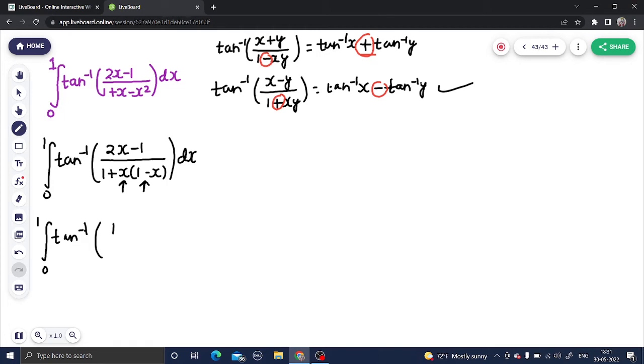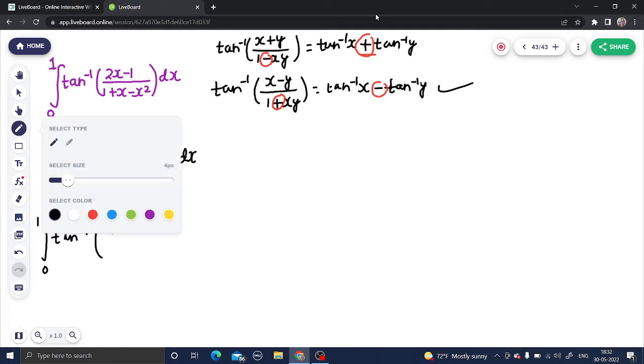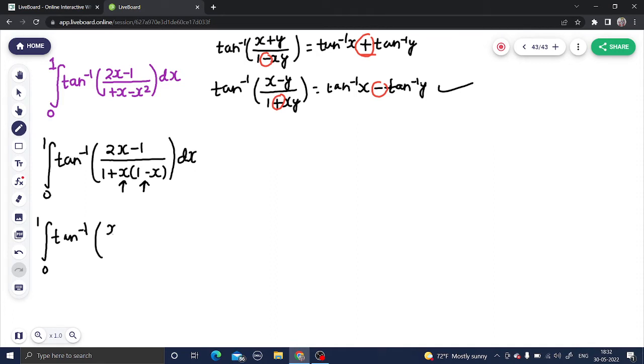How can we get that? Can we write this as 1 minus x minus x? This is not working because this is 1 minus 2x. So what can we try? We can go for x minus 1 minus x. I think this will work because you will be getting 2x minus 1 which is there in the numerator.